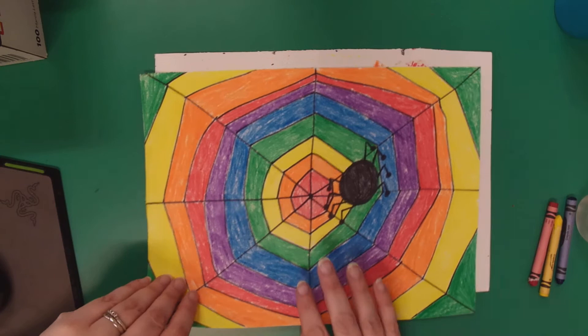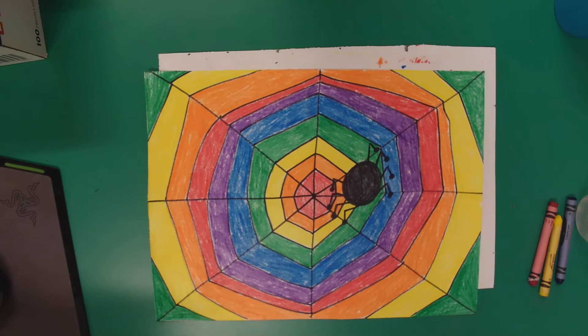Okay, so what we need is a piece of paper, your messy sheet underneath, a Sharpie marker, and something to color with. Make sure your colors have all the rainbow colors in them. I'm going to show you how to do the spider web, and you guys are going to be coloring that rainbow on your own.